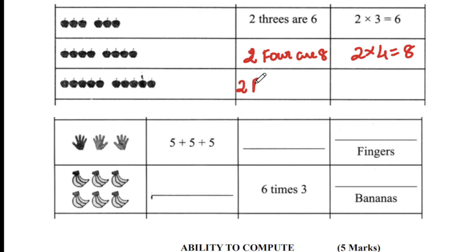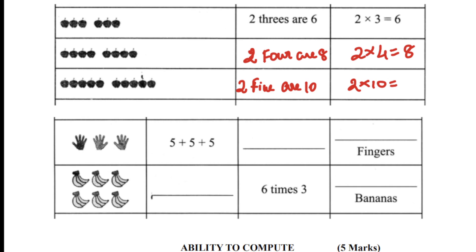Next: two times five are ten. So two into five is equal to ten. You can even count and verify.